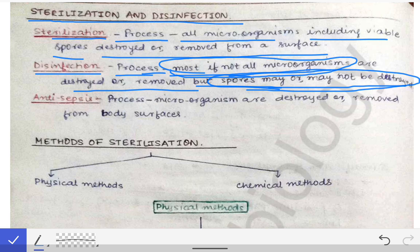It is compulsory in sterilization that the spores should have been removed. The two most important differences between sterilization and disinfection: in sterilization, strictly all microorganisms are removed, but in disinfection, most if not all microorganisms are removed.